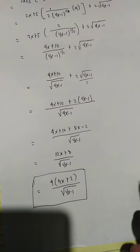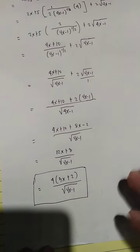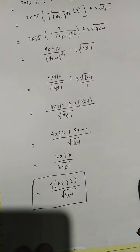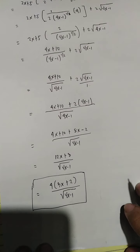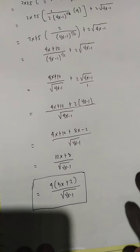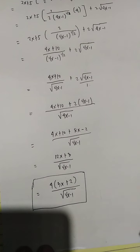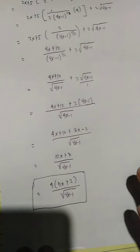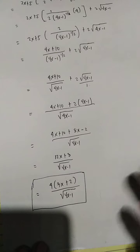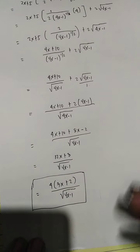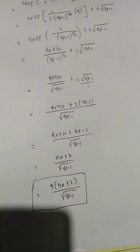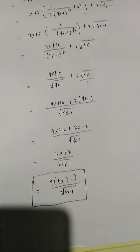That is the derivative of the given function y equals (2x plus 5) times the square root of 4x minus 1. By using the product rule, we obtain dy/dx equals 4(3x plus 2) all over the square root of 4x minus 1. Math Experts, thank you for watching. In the next video I will discuss another example. Please subscribe to my YouTube channel for more examples. Thank you and God bless!